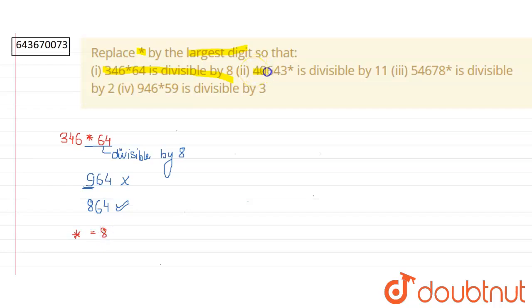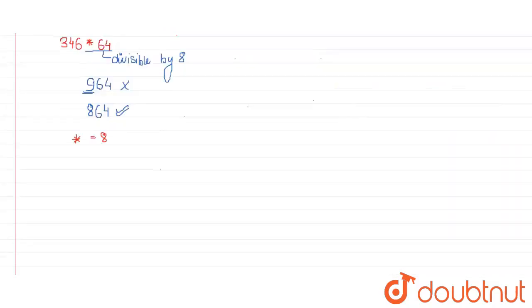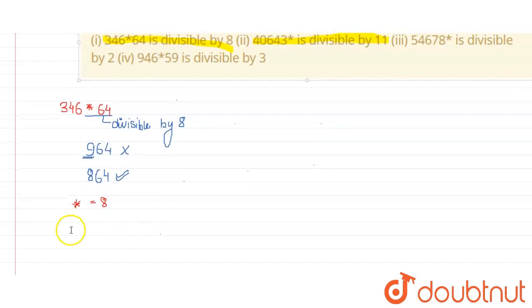Let's move to the next part, which is this number divisible by 11. We have to find the value of asterisk in this case. The number is 40643*.